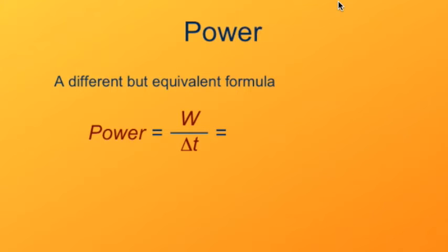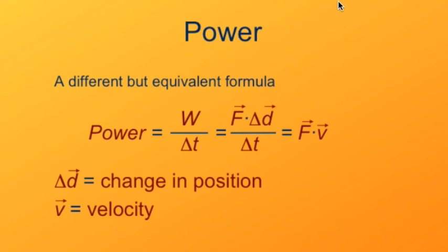Power is work done divided by the time interval. Break down work into its definition, the dot product between the force vector and the displacement vector. Now notice this delta D over delta T. Well, what's delta D over delta T? That's the velocity vector. So it's just as valid to consider the dot product between the force vector and the velocity vector.